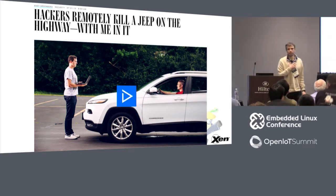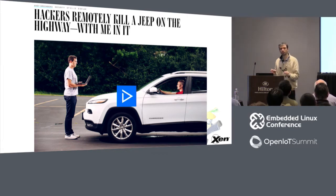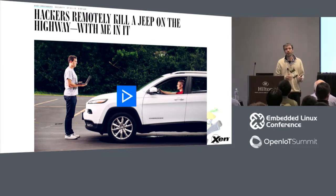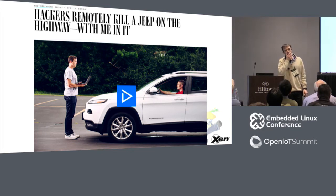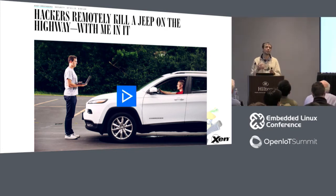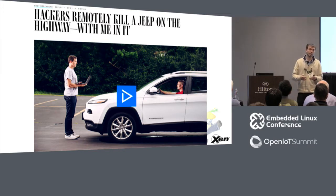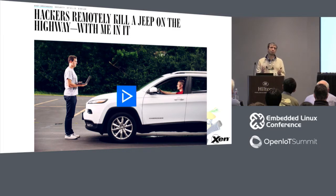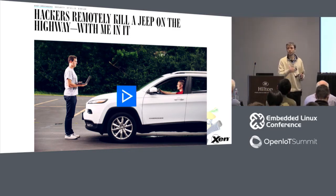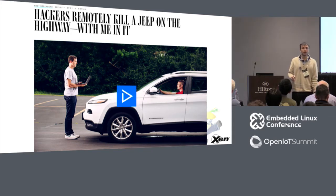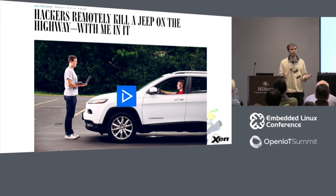The point I want to make is that this happened because there were components of different levels of criticality — like the brake system or even just the rear-view cameras — not properly separated from components of a very different level of criticality, like the infotainment system. My point is: if somebody makes a mistake and they do manage to break into your internet-connected infotainment system, you shouldn't worry because it should be completely isolated from everything else. Your car should be entirely safe still, at least the brake system. And this is where Xen helps you.